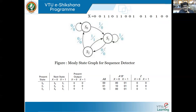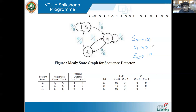Since there are three states, to represent three states I need a minimum of two bits. S-naught is encoded as 00, S1 as 01, and S2 as 10. You can encode in any pattern; it need not follow this specific order. From the state graph, we now try to build the state table, obtaining both the state graph and state table.